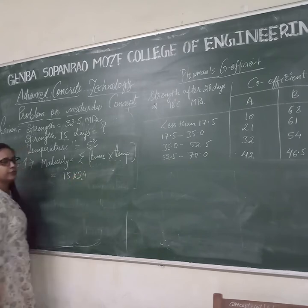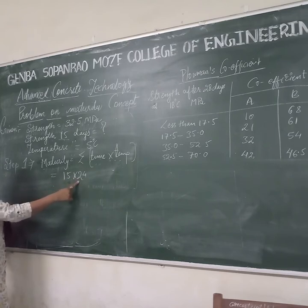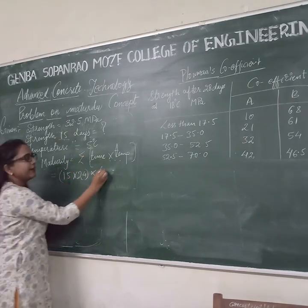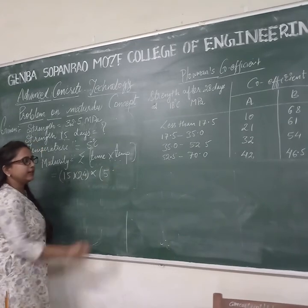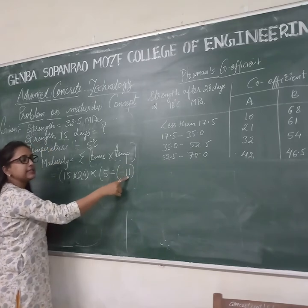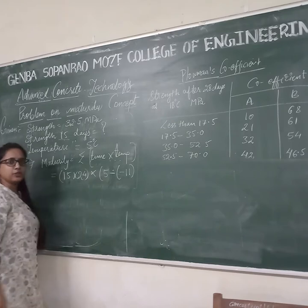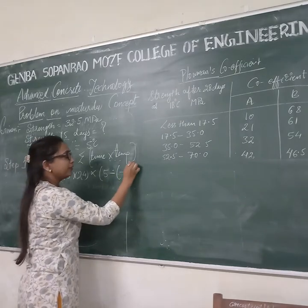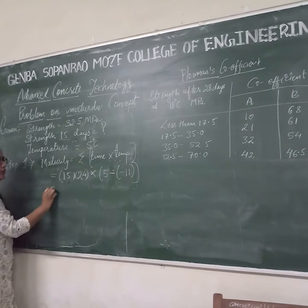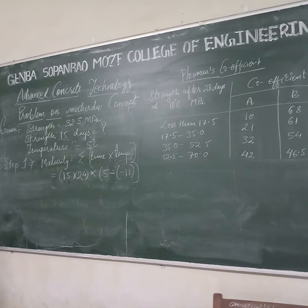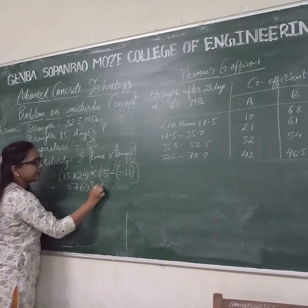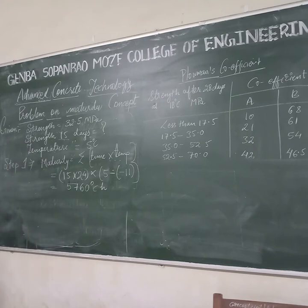15 days into 24 — we are converting time into hours, so 15 multiplied by 24 — into temperature. Temperature is 5 degrees centigrade, minus the datum temperature of minus 11. Below this datum temperature, maturity cannot take place and strength cannot develop. The minimum temperature for maturity to take place is minus 11 degrees centigrade. By this formula you will get the value 5760 degree centigrade hours, meaning you have taken the value in degree centigrade hours.